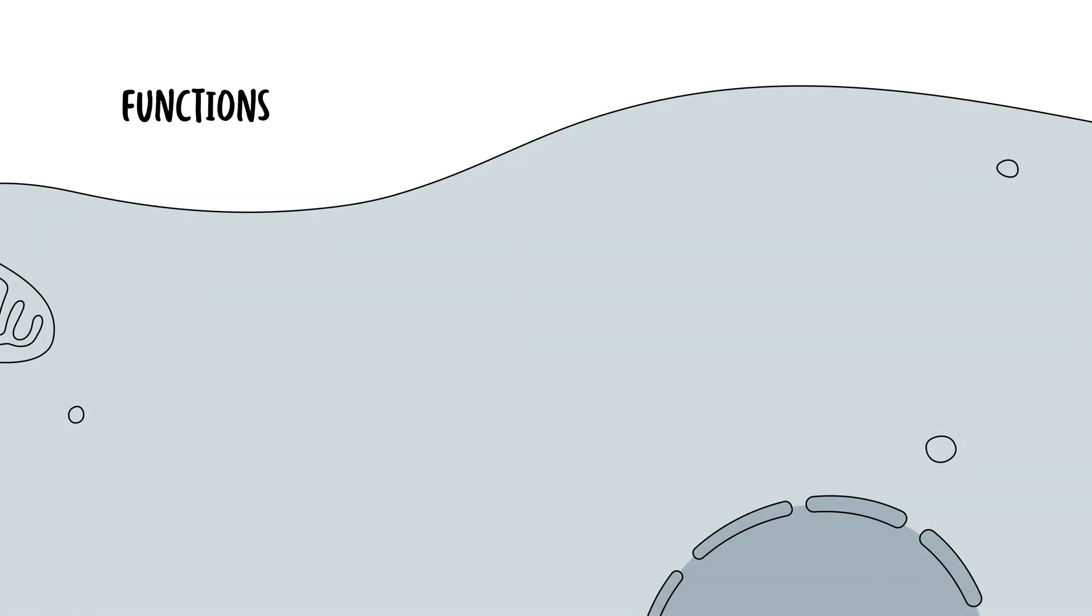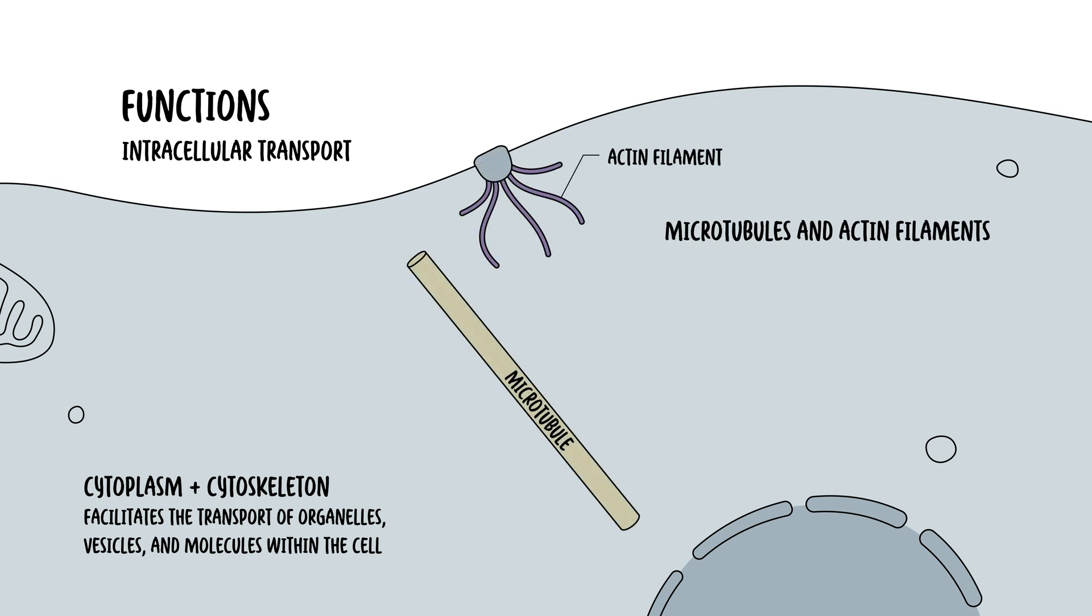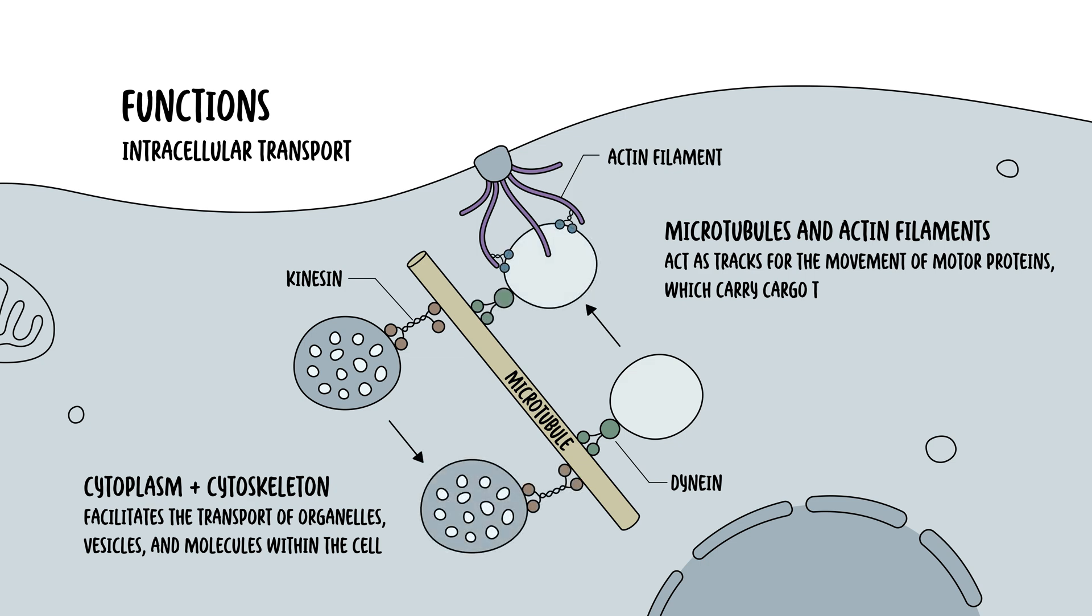The cytoplasm is also an area for intracellular transport. And this is aided by the cytoskeleton, which facilitates the transport of organelles, vesicles, and other molecules within the cell. The cytoskeleton involved in particular are the microtubules and actin filaments. These act as tracks for the movement of motor proteins, kinesin and dynein, which carry cargo to their destination around the cell.